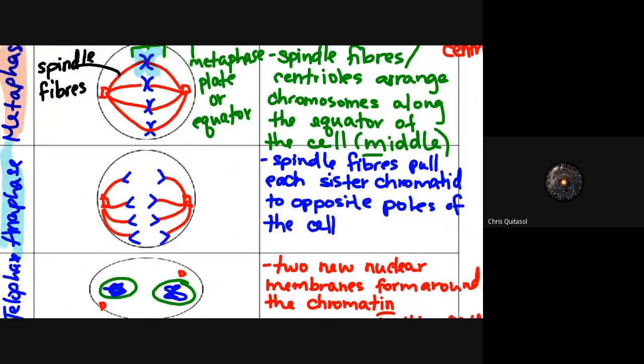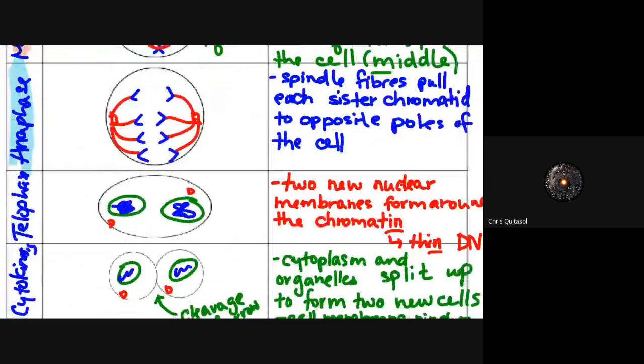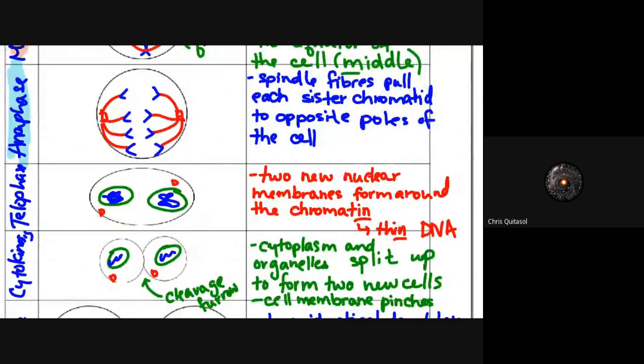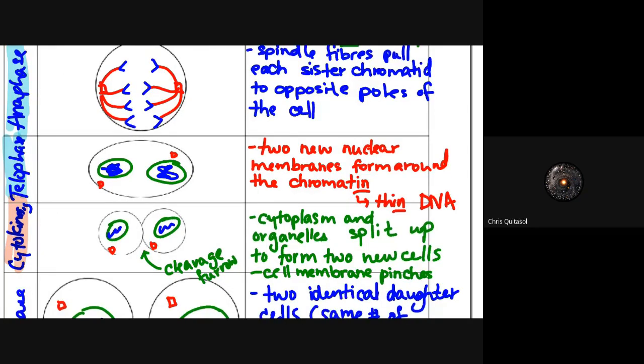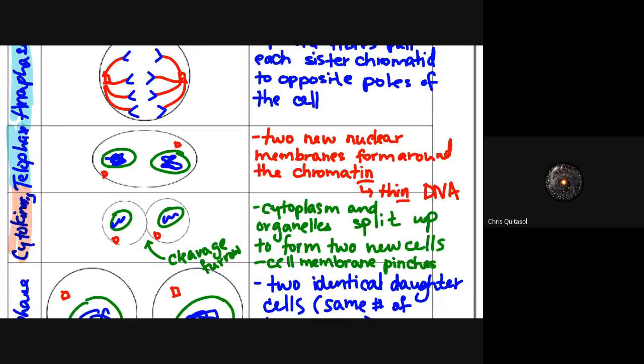In telophase, two new nuclear membranes form around that genetic information - those two separate sets of genetic information - and the chromatin, which is the thinner, non-condensed DNA. Telophase is the last stage of mitosis where mitosis is complete. Mitosis is the splitting of the genetic information and the encapsulation with two new nuclear membranes in a single cell. Then the last step of cell division is cytokinesis, where the cell actually physically splits into two cells. Those two new cells start to have their organelles come back, the cell membrane is closed off, and two distinct functioning cells are created, allowing them to go back into interphase where the same process of G1, S, and G2 will repeat.